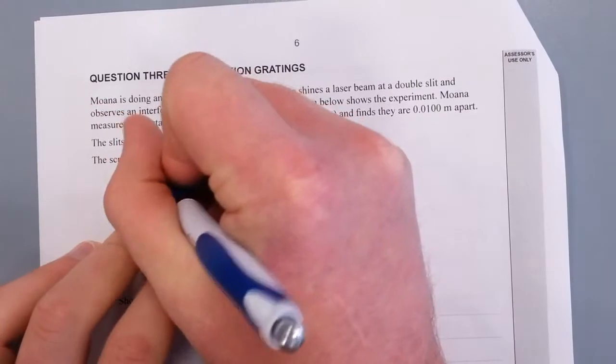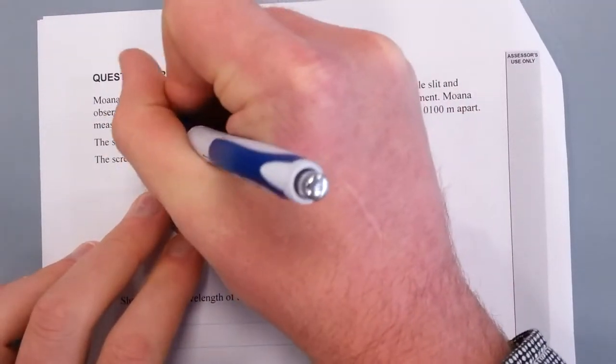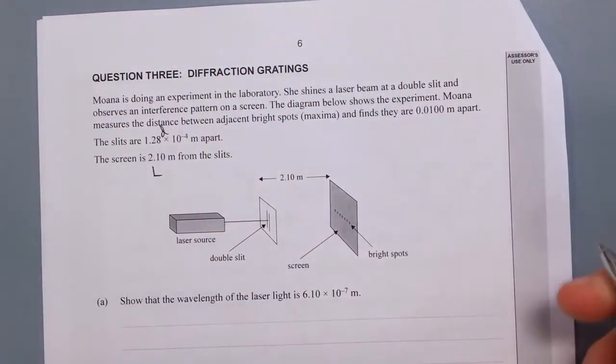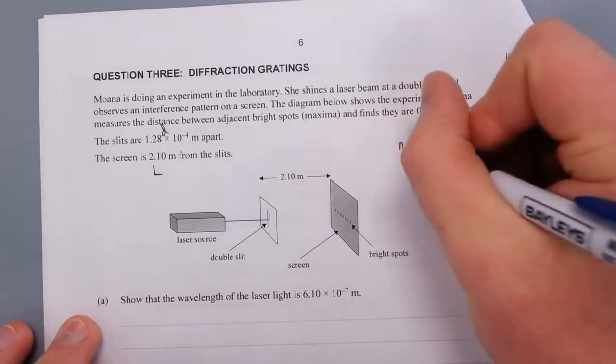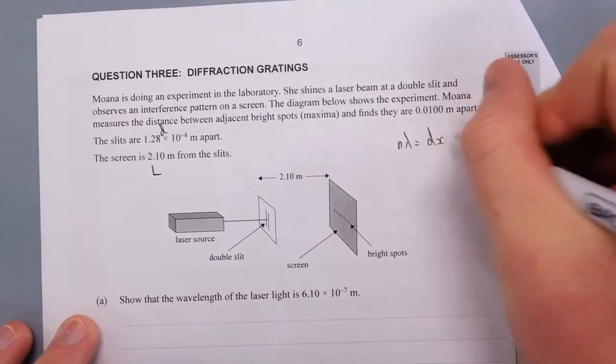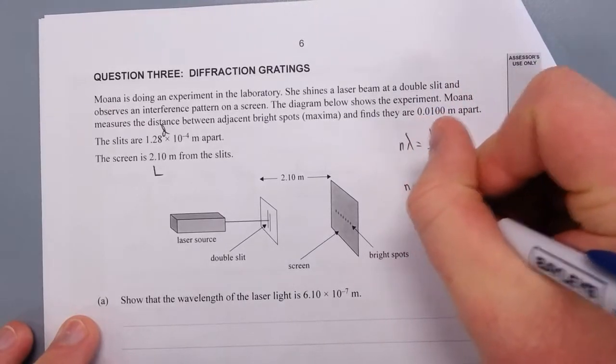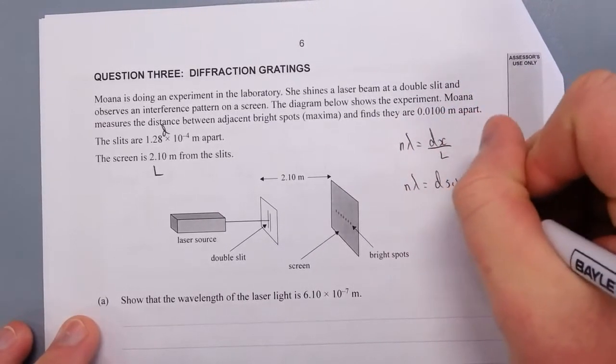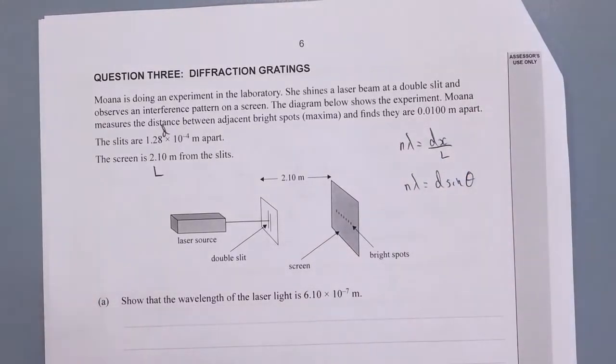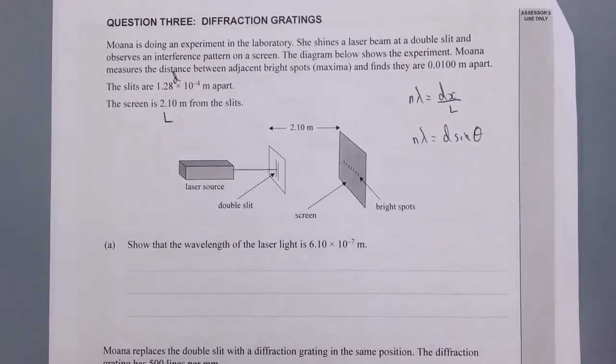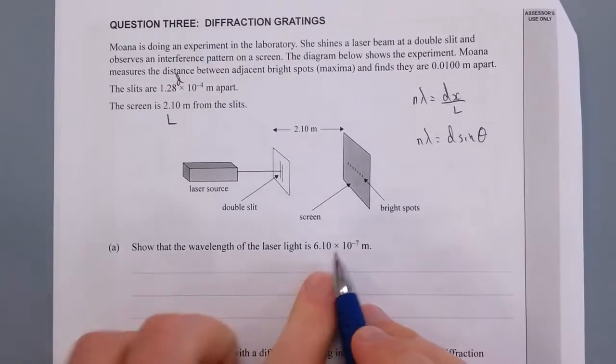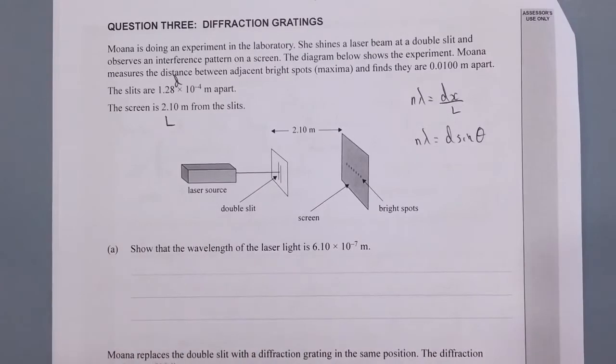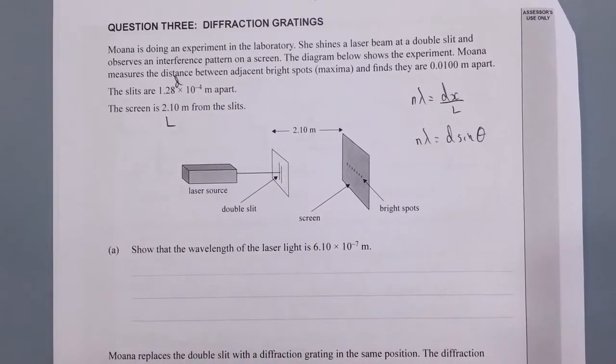So let's just write that is L, that is D. If you've got your formula sheet, you'll notice that nλ = dx/L, or nλ = d sin θ. We'll come back to when to use those ones. First question: Show that the wavelength of the laser light is 6.1 times 10^-7 m. That's 610 nm, and that is red light if you've got a laser.